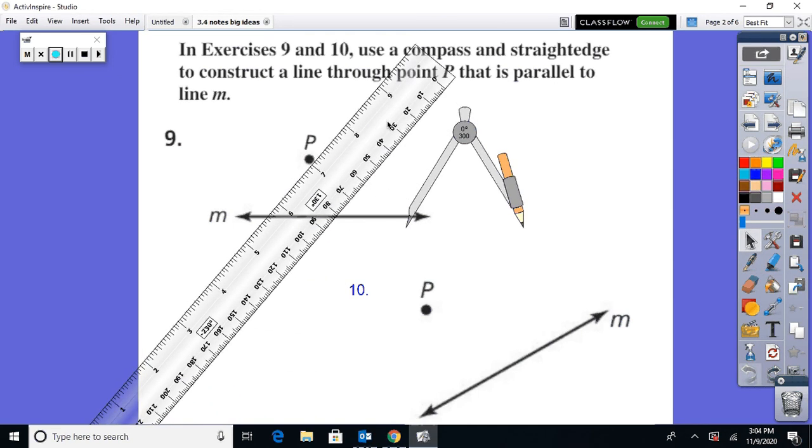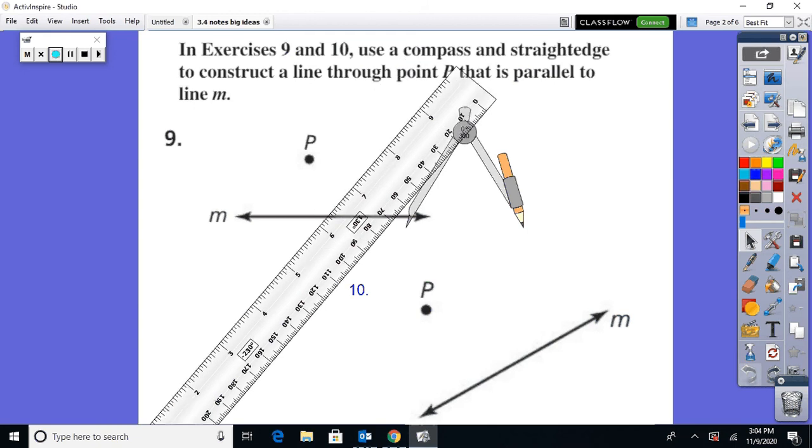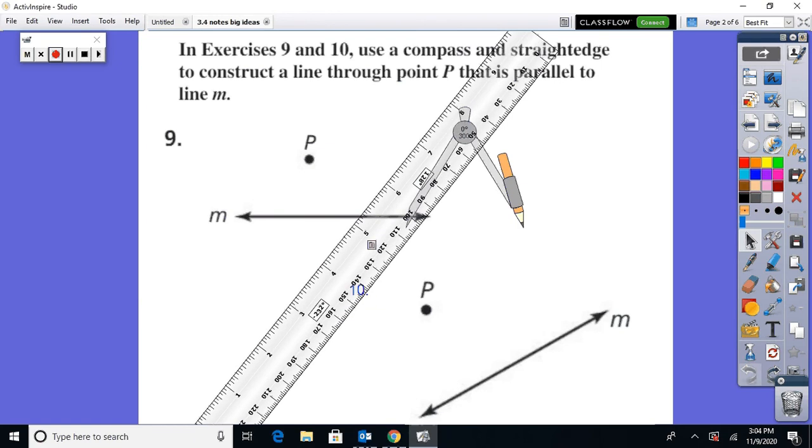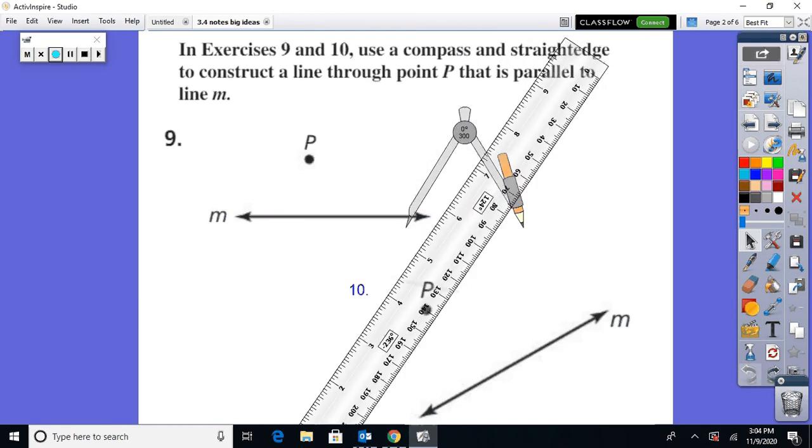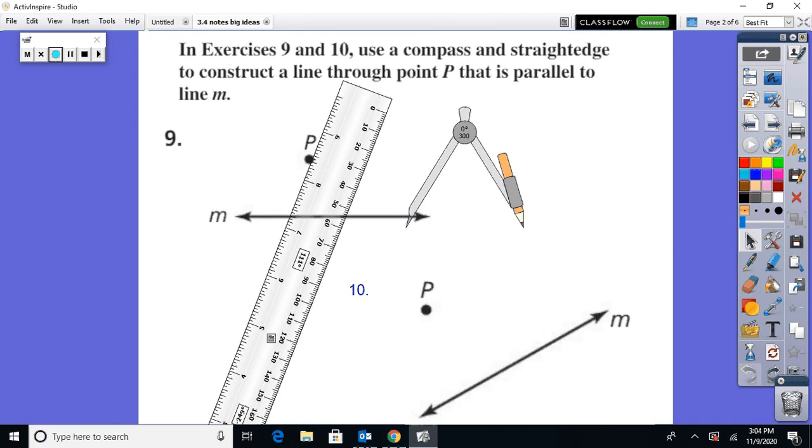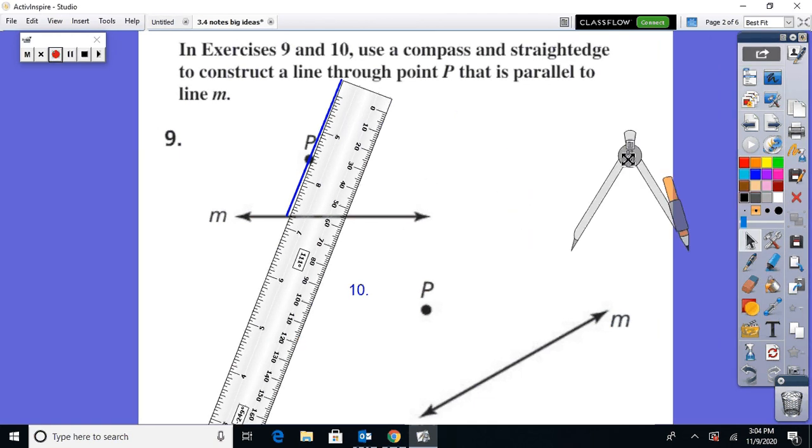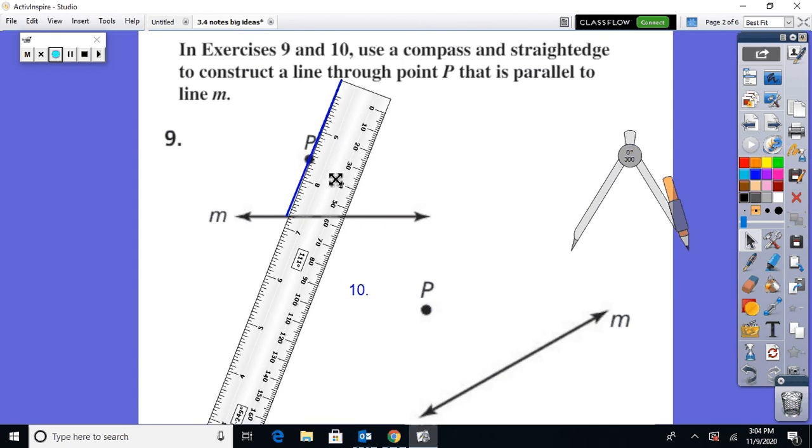Because what we want to do eventually is we want to have a line parallel to M that's passing through P. So to do that, we want to... And it might take me a little bit of time with this ruler here, my friends. So bear with me.